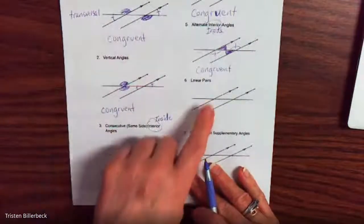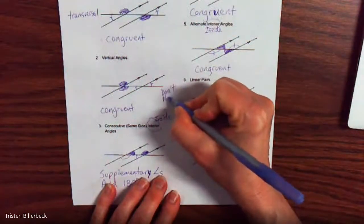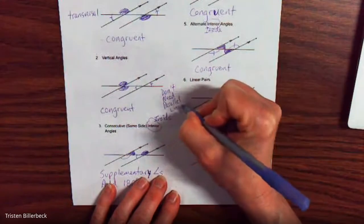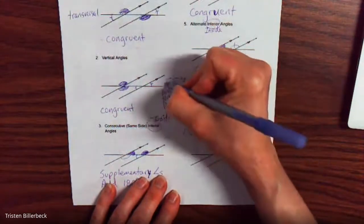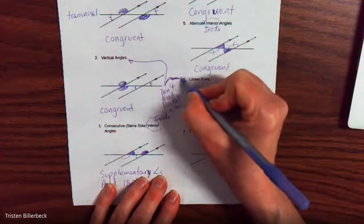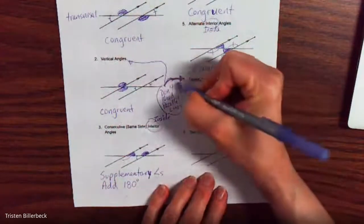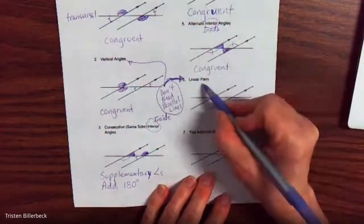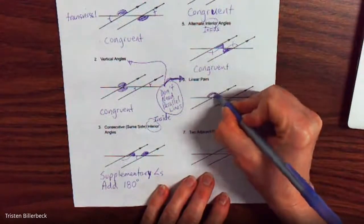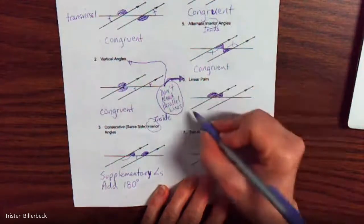Linear pairs — like vertical angles, these don't need parallel lines. You don't need parallel lines for this. A linear pair works together as a pair of angles that work together to make a line. So our first linear angle would be right here on the top and then this little one right here. They are supplementary and add to 180 degrees.